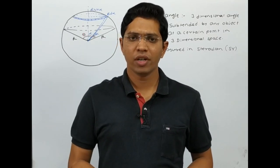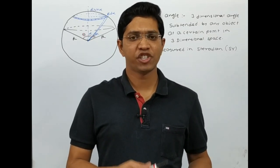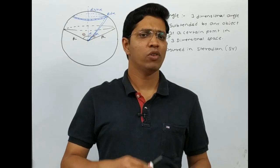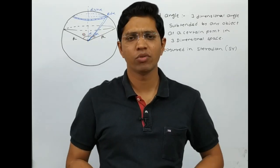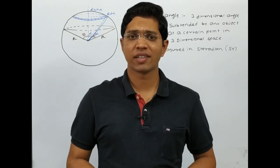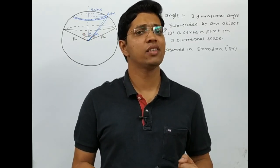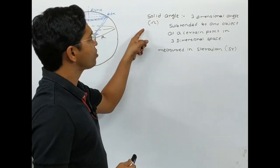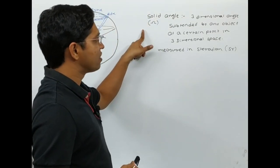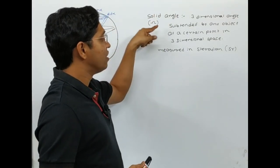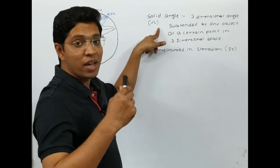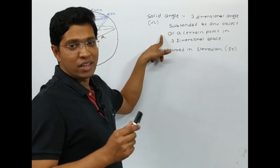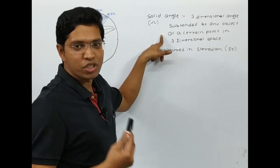In this video, we are going to analyze the relation between the linear angle and solid angle. But before directly going into the relation, first we will try to understand what exactly the solid angle means. The definition of solid angle is: it is a three-dimensional angle subtended by any object at a certain point in a three-dimensional space.